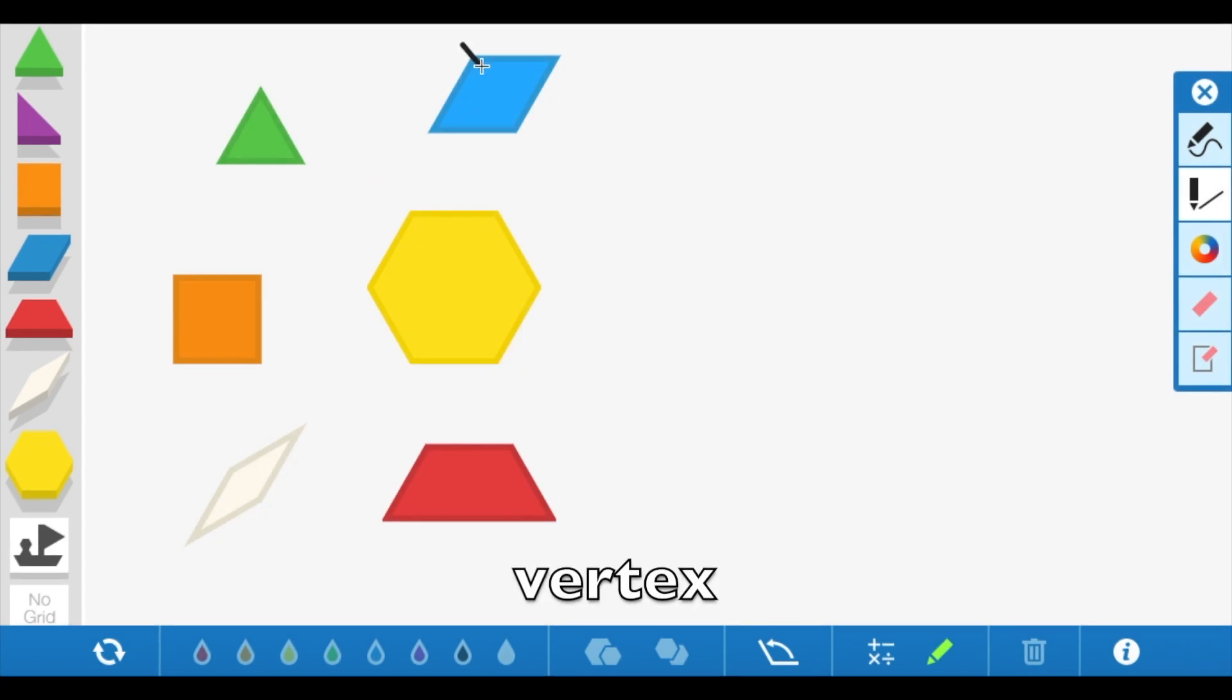Vertex is just a fancy word that means corner. There are four corners on this rhombus. There are also four sides on this rhombus. Each polygon has the same number of vertices as it has sides.